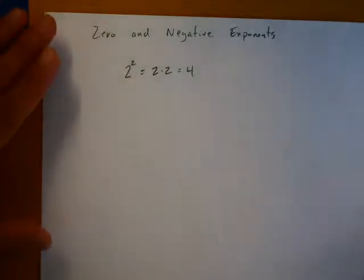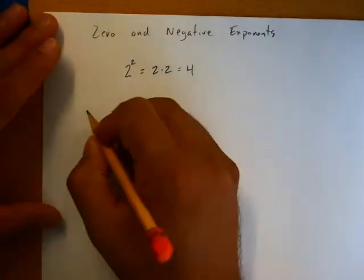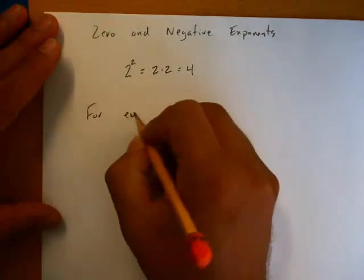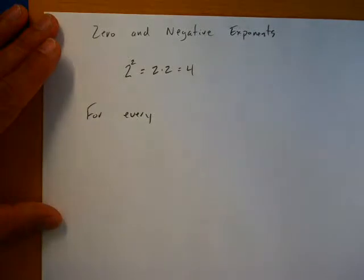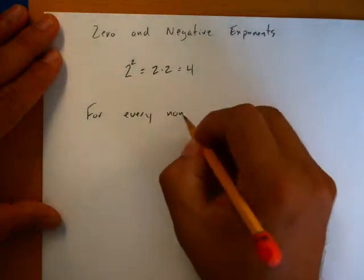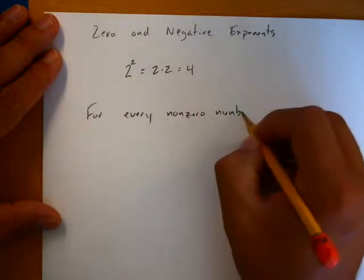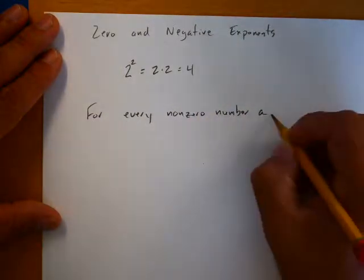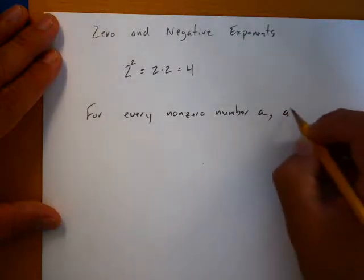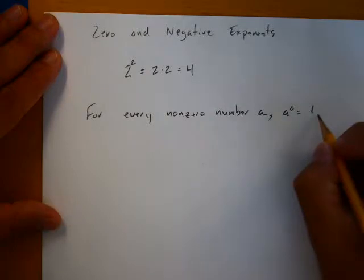So I got a little rule for you. For every non-zero number a, a to the zero is equal to one. So that always holds true.